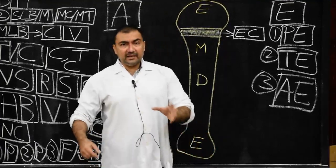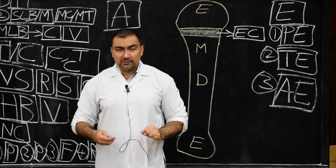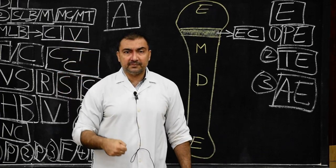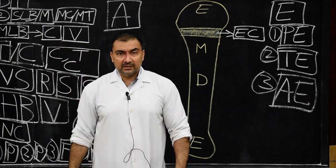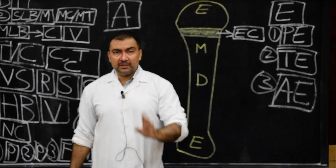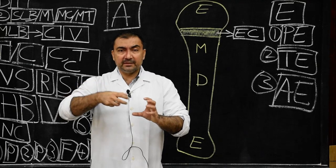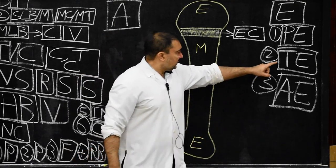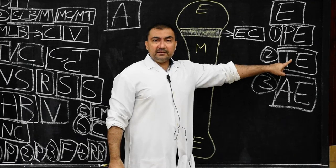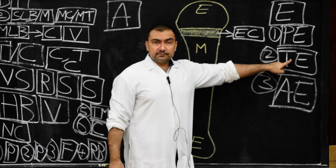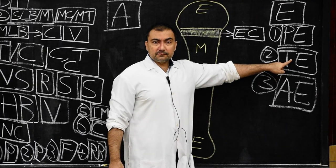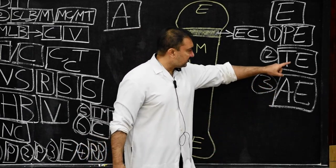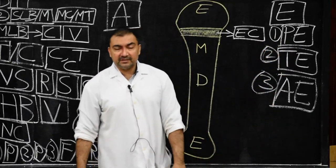Traction epiphysis develops in regions subjected to traction due to the pull of certain muscles or ligaments. Examples of traction epiphysis are the trochanters of femur as well as the tubercles of humerus.